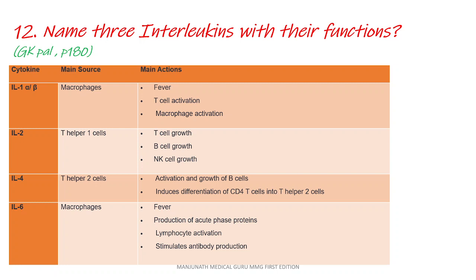Interleukin-2: the main actions of interleukin-2 are T-cell growth, B-cell growth, and natural killer cell growth. Interleukin-4: the main source of interleukin-4 are T-helper-2 cells. The main actions of interleukin-4 are activation and growth of B-cells, and it induces differentiation of CD4 T-cells into T-helper-2 cells.